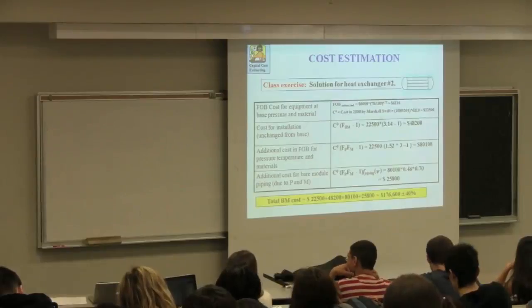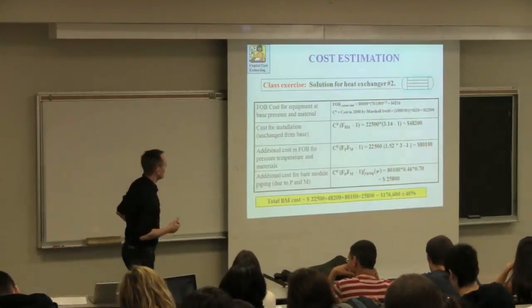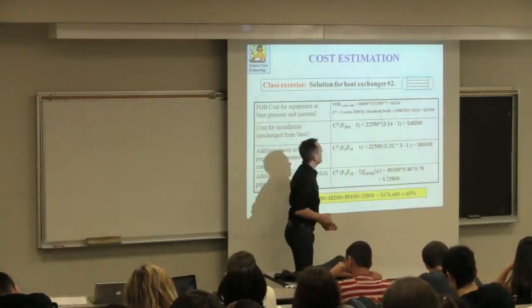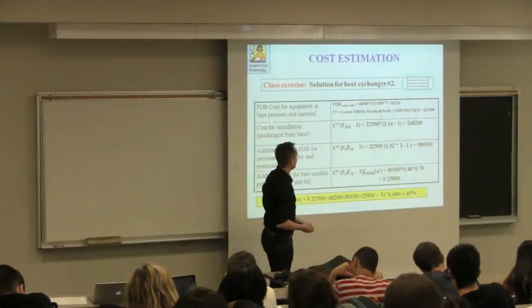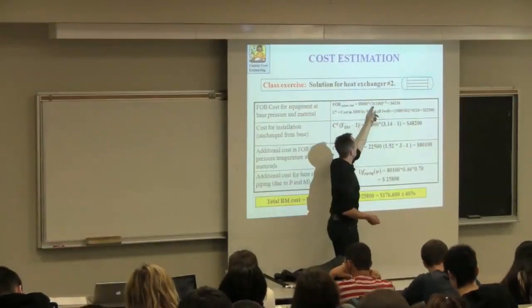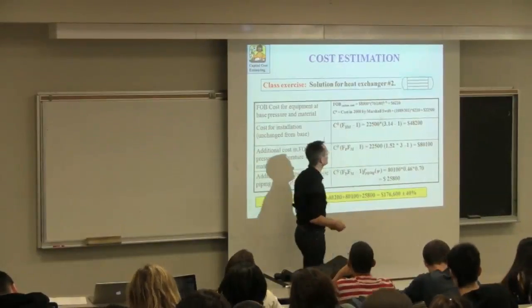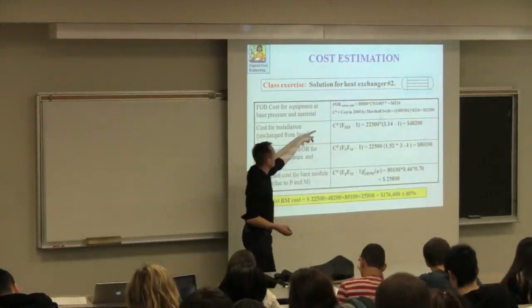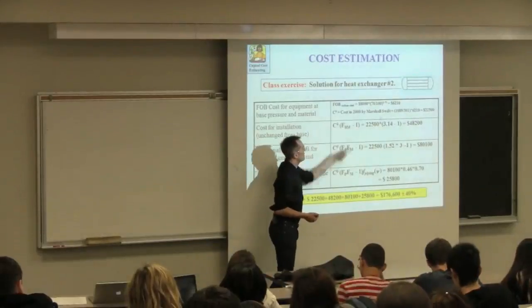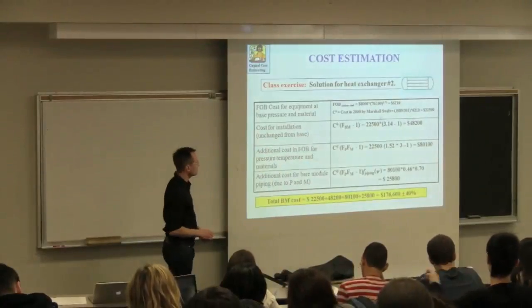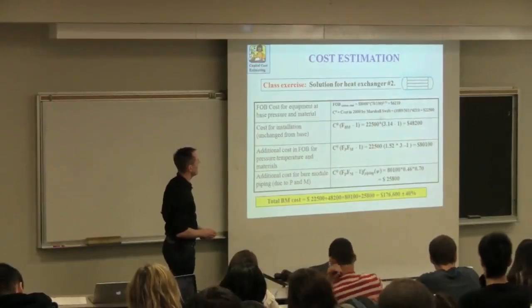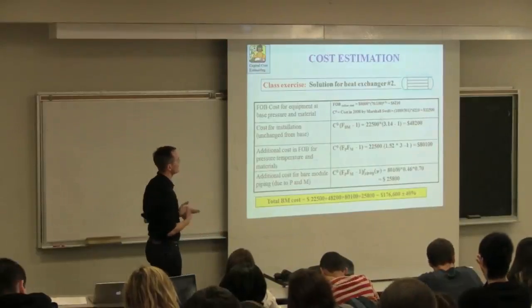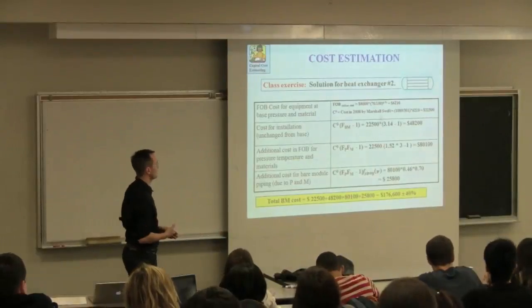Okay, so while we're taking it down, I'll just recap that problem then. The first step we did is we looked up the correlation for heat exchanger, and it's carbon steel. It gave us a base price of 8,000, but it was for 100 meters squared heat exchanger. Our exchanger was 70 meters squared. So we have to ratio 70 to 100 raised to the power of n.